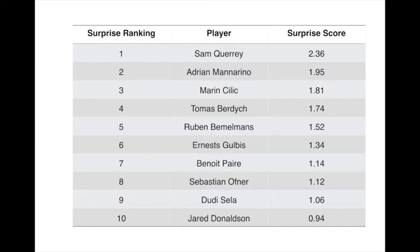Next we have Thomas Berdych taking the fourth spot. A lesser-known name lands in number five: Ruben Bemelmans, who was tearing up the first week — although he wasn't getting as much coverage as some of the more recognized players. Bemelmans' wins over Tommy Haas and Daniil Medvedev in the first week each earned him 0.8 to his surprise score. In the sixth spot we have Ernests Gulbis, who was getting a lot of attention in week one. Gulbis ultimately reached the round of 32 and his biggest win was over Juan Martin del Potro, making him a player to watch for the rest of the season.